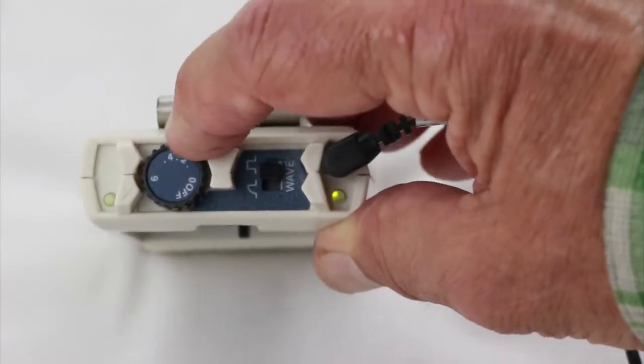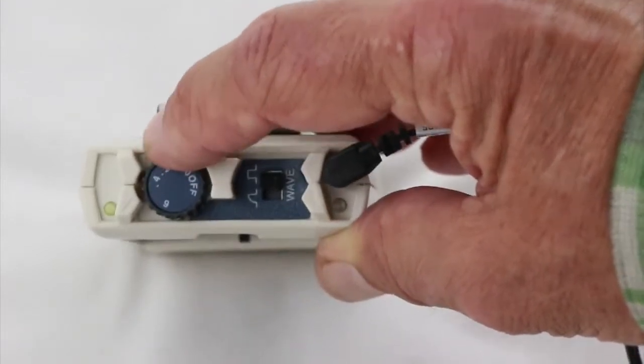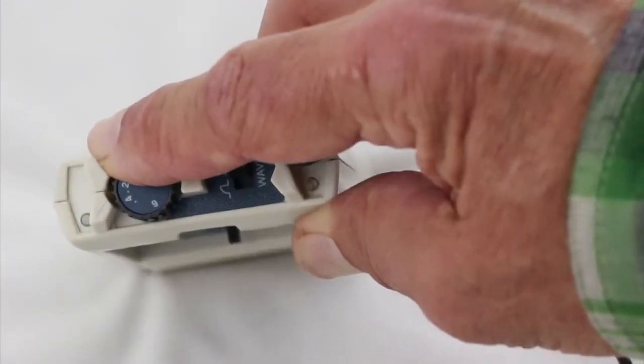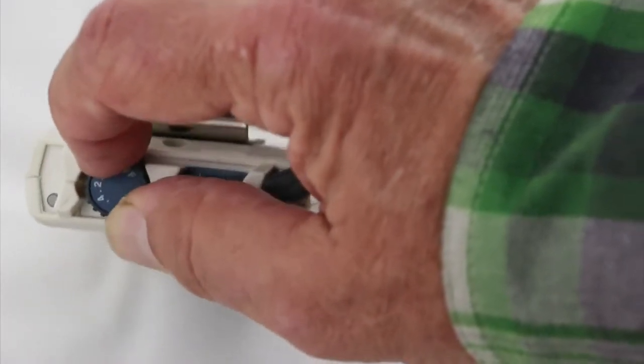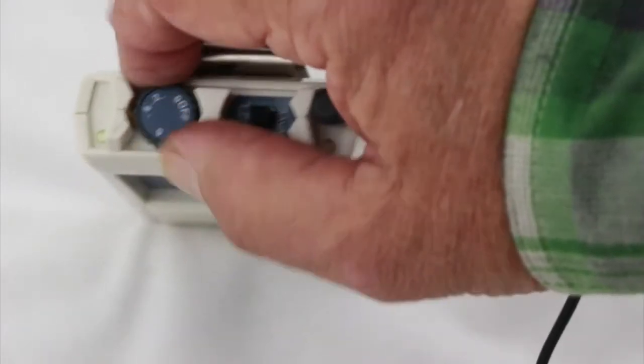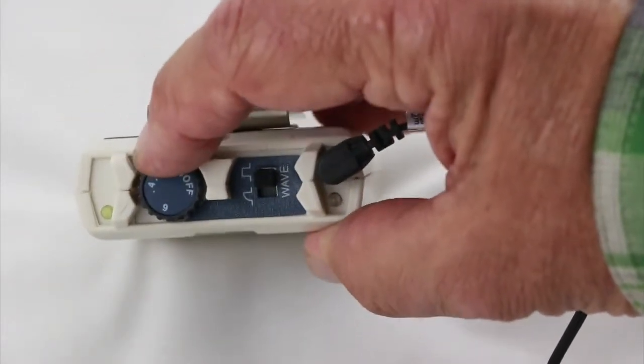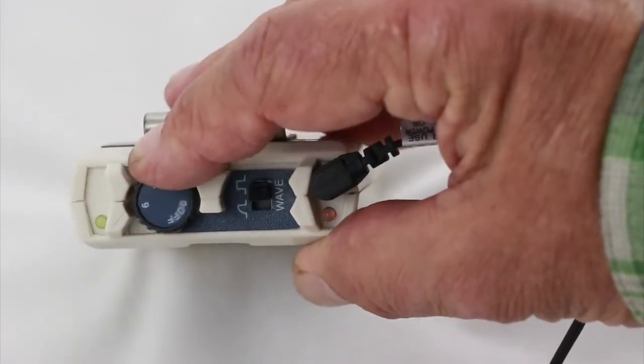Now if we look here and I turn up the current, you will see that there is a light over on the right that flashes red and green. As I turn the current down, those lights get dimmer until they almost go out. And if you turn off the unit, they are gone.